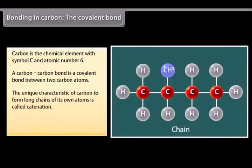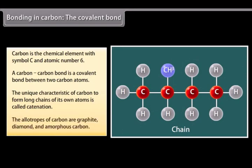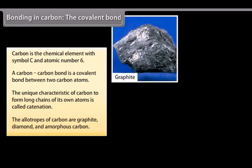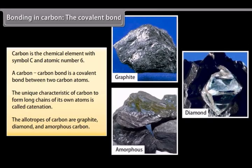Carbon also has the unique characteristic to form long chains of its own atoms. This property is called catenation. The allotropes of carbon are graphite, diamond, and amorphous carbon.